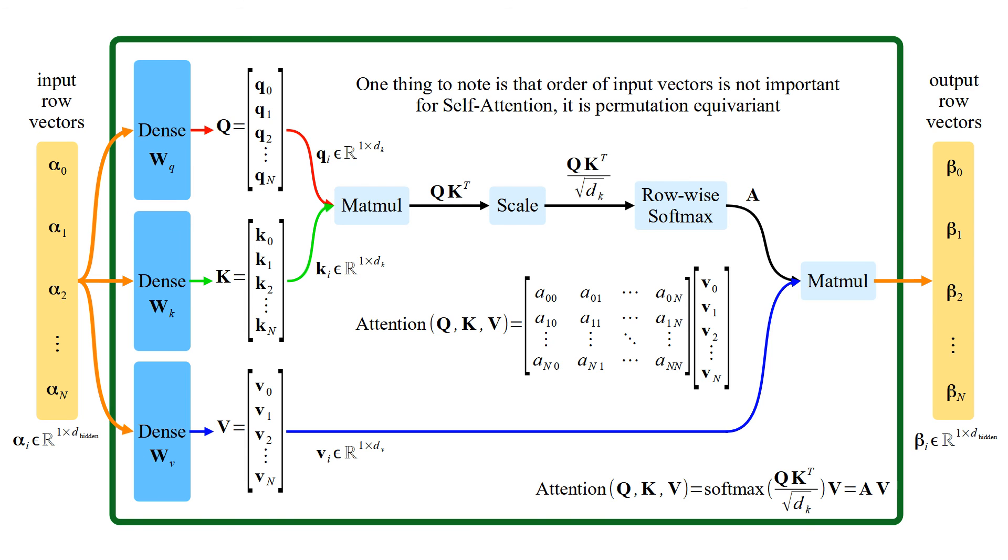One thing to note is that order of input vectors is not important for self-attention. It is permutation equivariant. If order of input vectors change, order of output vectors change the same way. That's why positional embeddings are added while preparing input embeddings for transformer.